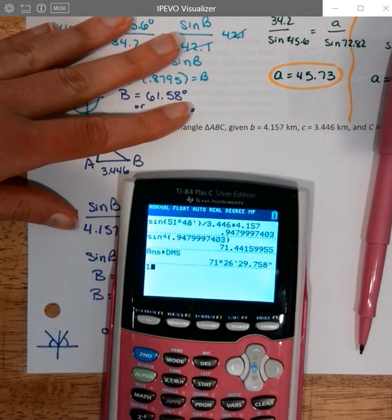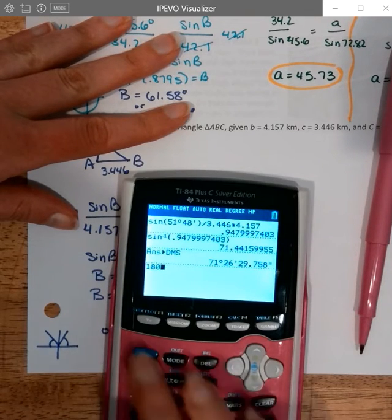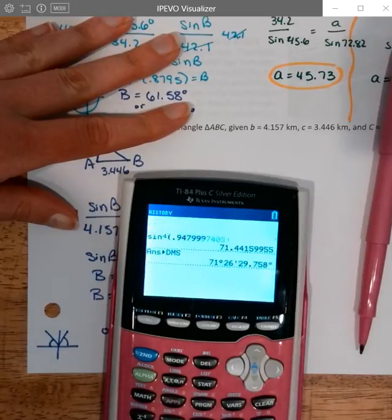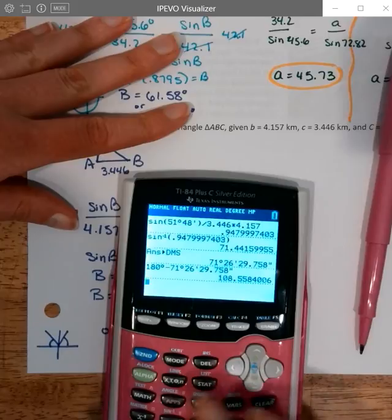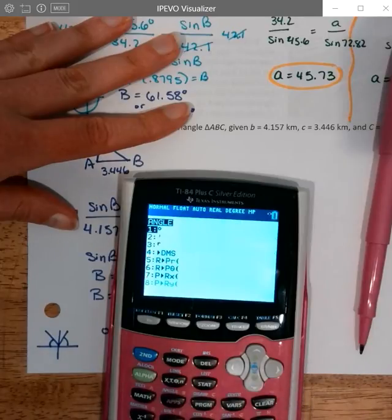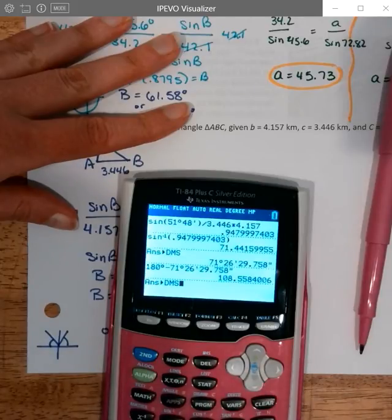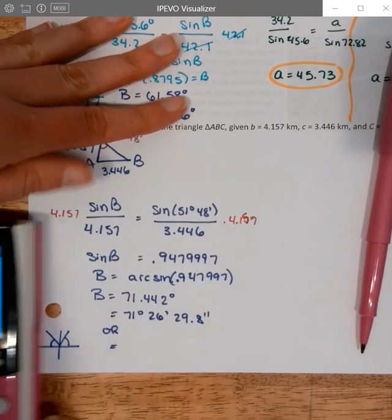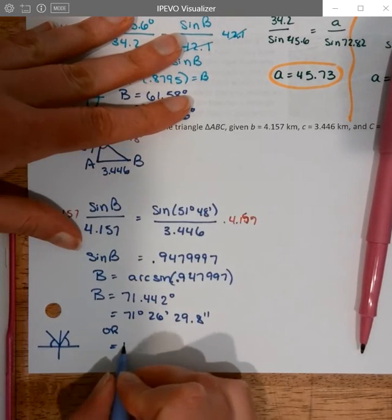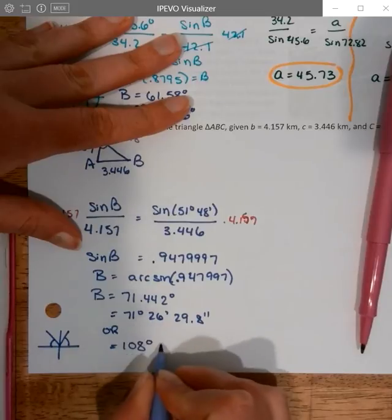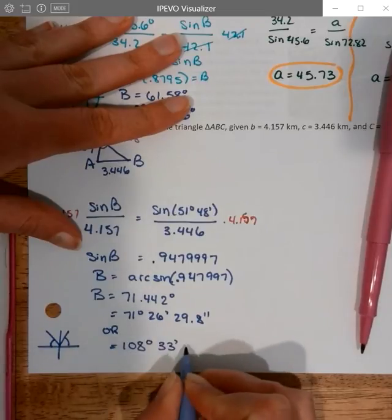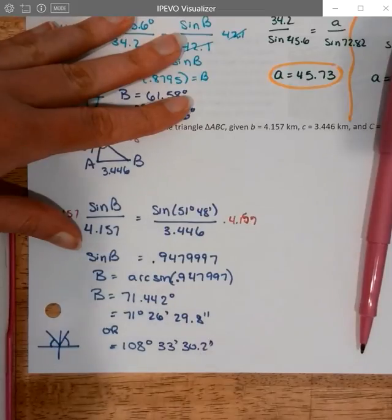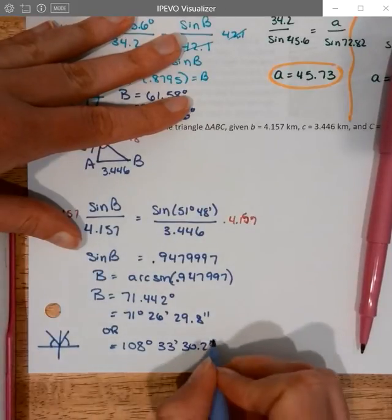So I can take 180 degrees minus this angle in DMS. And it should give it back to me. And then I can convert it into DMS. Okay. So 108 degrees is the other option for B. 108 degrees, 33 minutes, and 30.2 seconds.